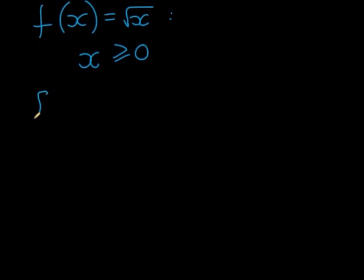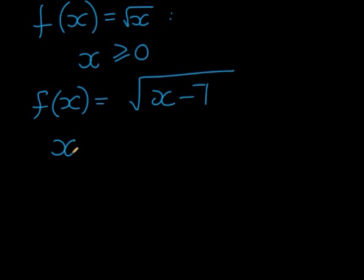How about if I have f(x), and as an input I actually have x minus 7. x minus 7 in this case, I see that x minus 7 must be bigger or equal to 0. The input must be bigger or equal to 0.